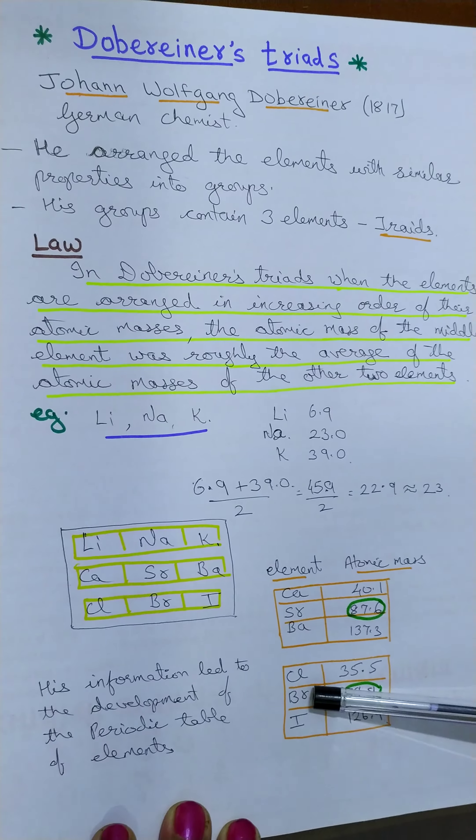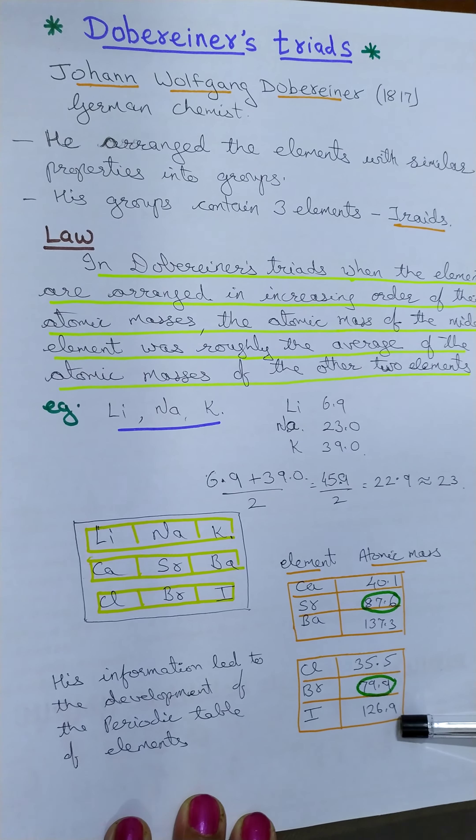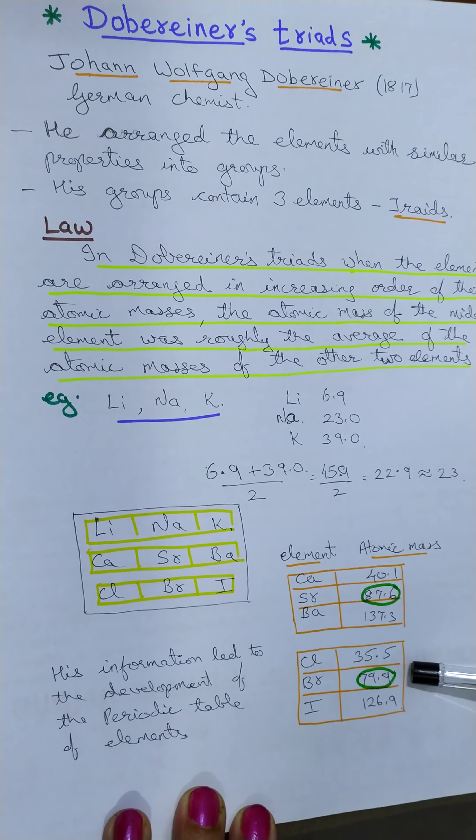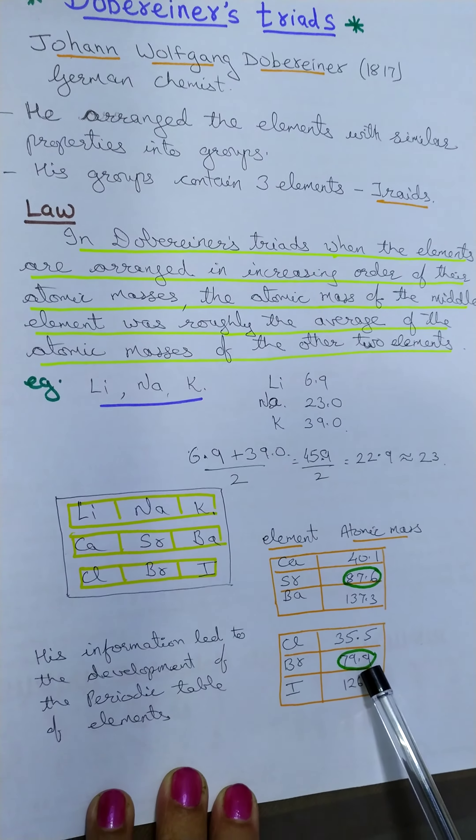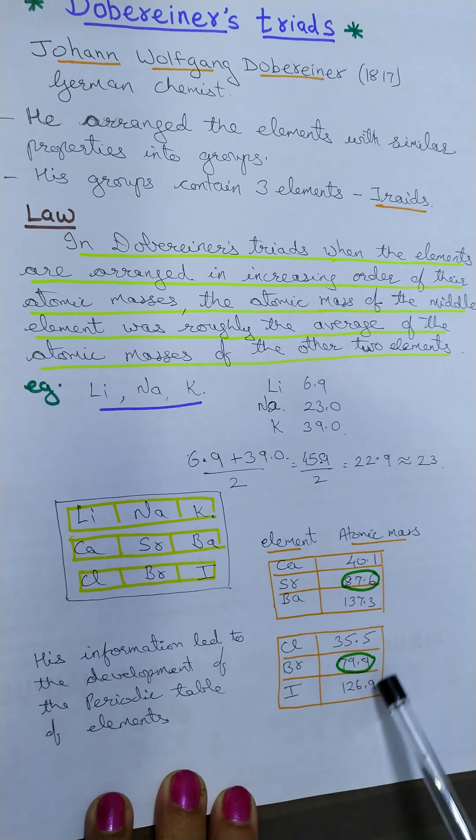that is chlorine, bromine and iodine. These are the atomic masses and if you again calculate, you will find the same thing, that is the atomic mass of the middle element is the approximate mean of the other two.